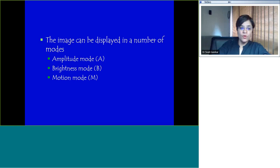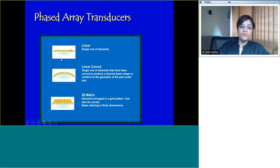The image that comes back can be displayed in a number of modes: the amplitude mode, A mode, brightness mode and the motion mode. The arrangement of the probe varies. You can have a linear probe that our radiologist colleagues use, a linear curved probe, a single row of elements that are curved to produce a desired beam shape, which we use for our fetal echo. Then there's a 2D matrix or 3D matrix probe where the elements are arranged in a grid pattern.